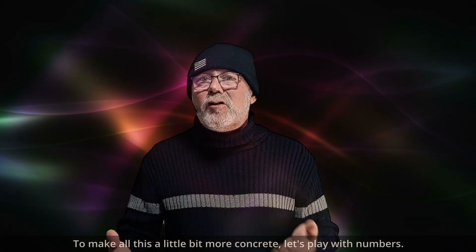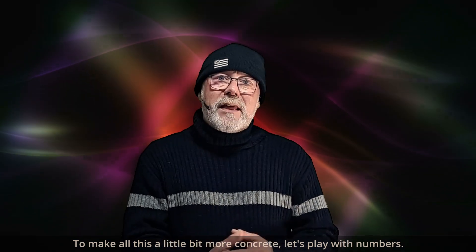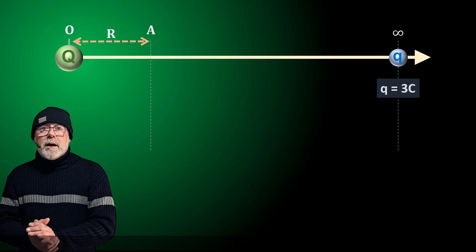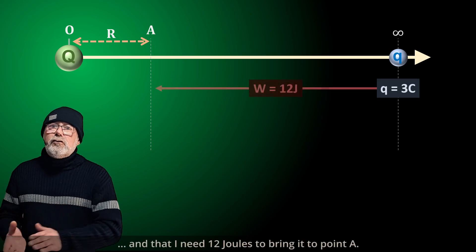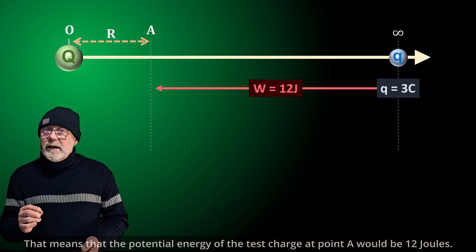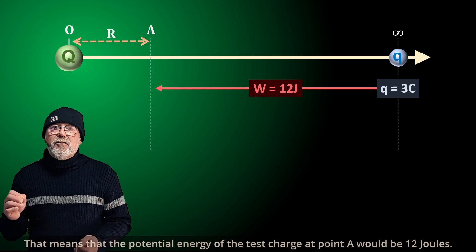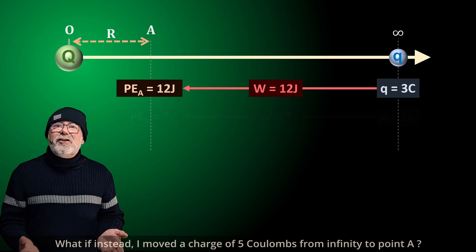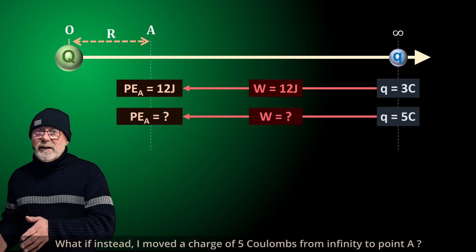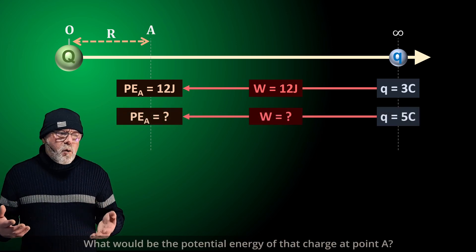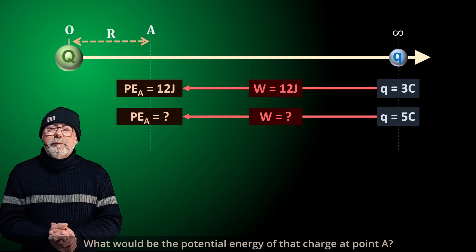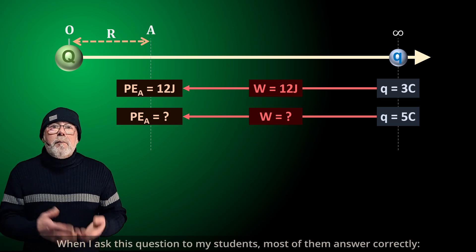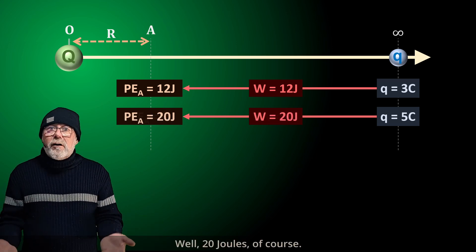To make all this more concrete, let's play with numbers. Imagine that the test charge would be 3 coulombs, and that I need 12 joules to bring it to point A. That means the potential energy of the test charge at point A would be 12 joules. What if instead I moved a charge of 5 coulombs from infinity to point A? What would be the potential energy of that charge at point A? Most students answer correctly: 20 joules, of course.